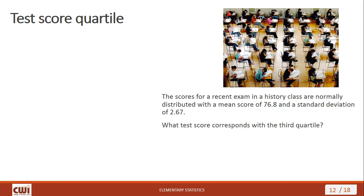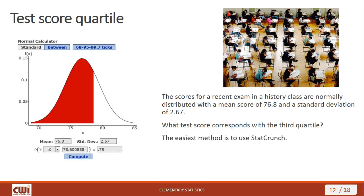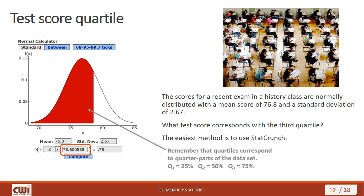Quartiles become easy to calculate with StatCrunch as well, because quartiles are simply set percentiles. What test score corresponds with the third quartile? In the normal calculator, enter 75% for the area field and less than or equal to for the dropdown, then hit Compute. The answer is 78.6. Remember, quartiles correspond to quarter parts of our data: Q1 is 25%, Q2 (the median, which for a normal distribution equals the mean) is 50%, and Q3 is 75%.